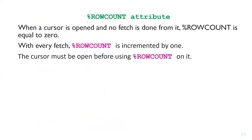The last explicit cursor attribute is %ROWCOUNT. When a cursor is opened and no fetch has been done, the row count equals zero. Each fetch increments the %ROWCOUNT by one. You will get the total record count when you return to the last fetch. You first have to open the cursor and then evaluate the row count.